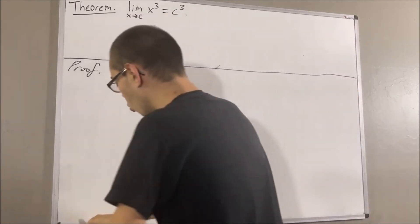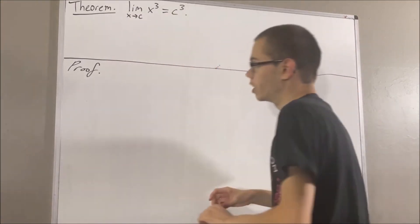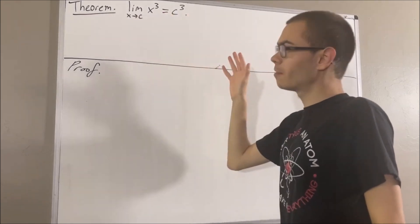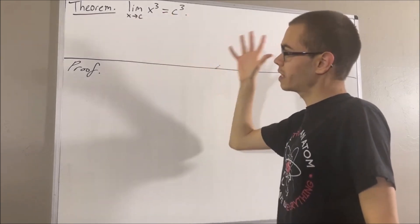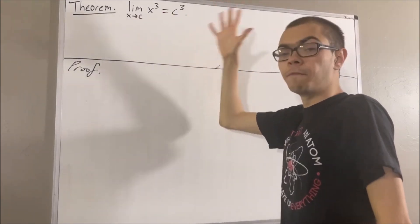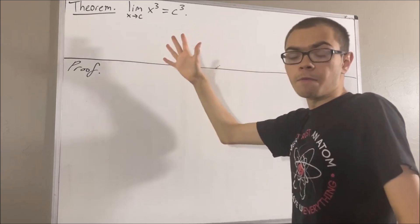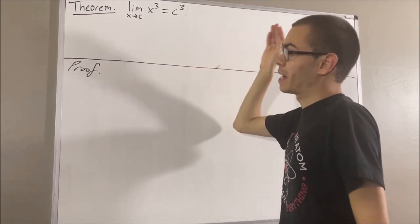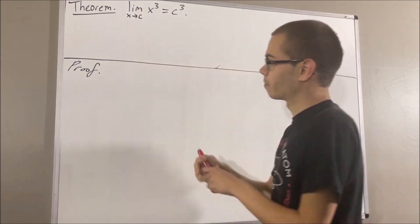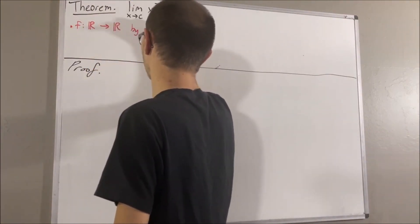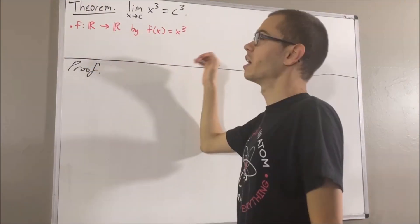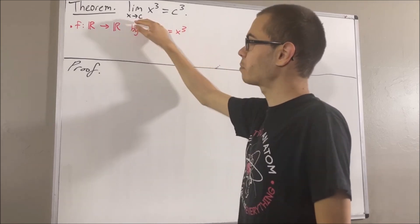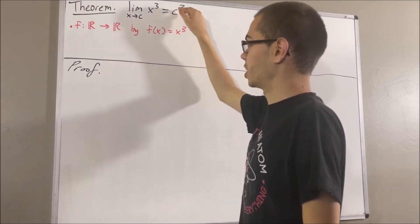We're really dealing with the limit of a function. The function is the function f, from the set of real numbers to the set of real numbers, defined by f of x equals x cubed. And really, we want to show that the limit of our function as x approaches c is equal to c cubed.